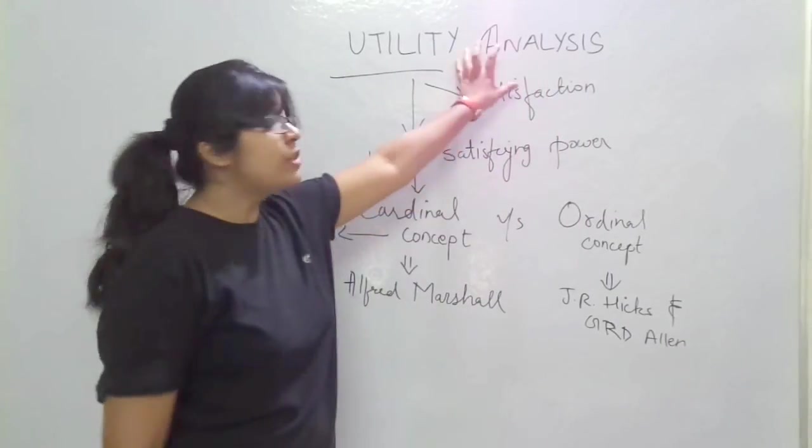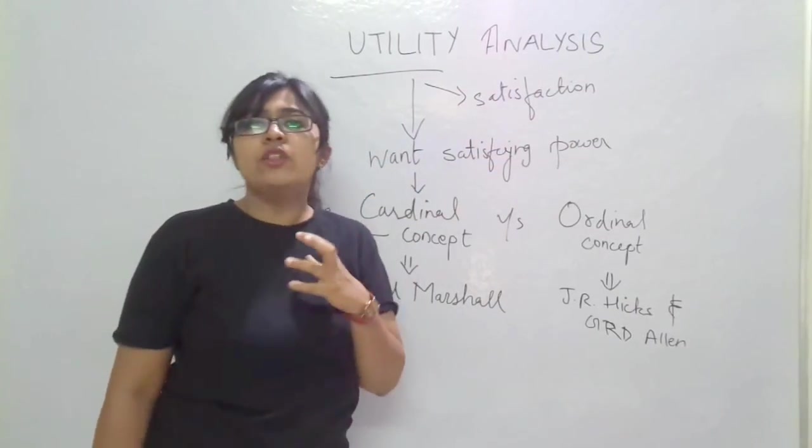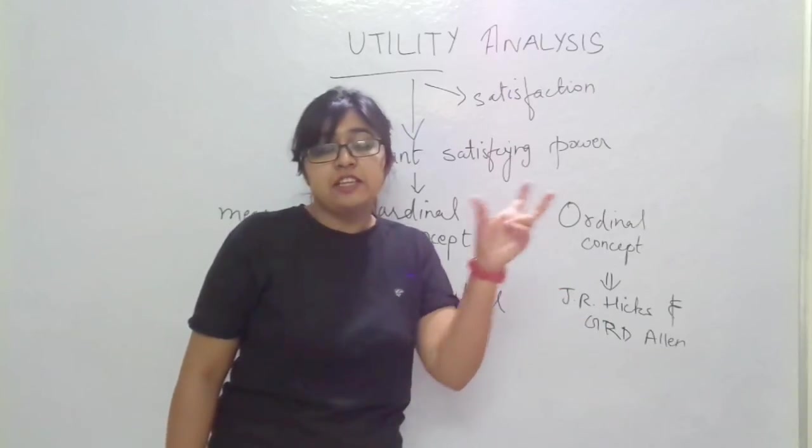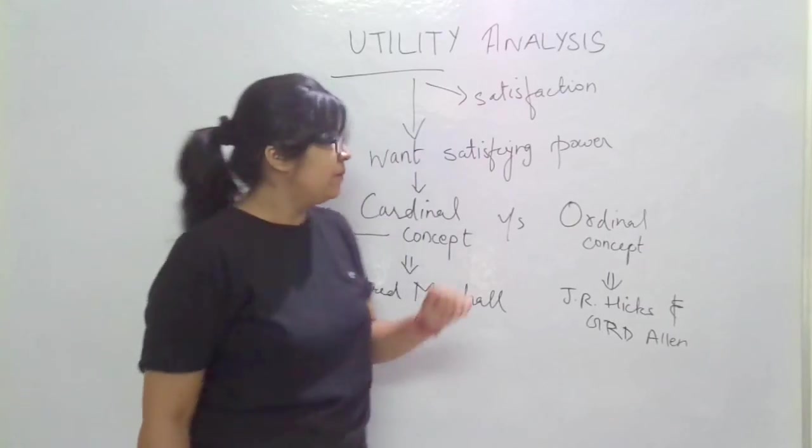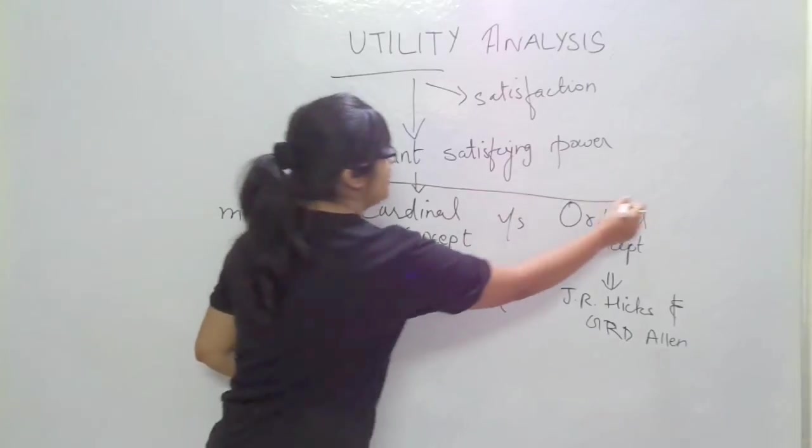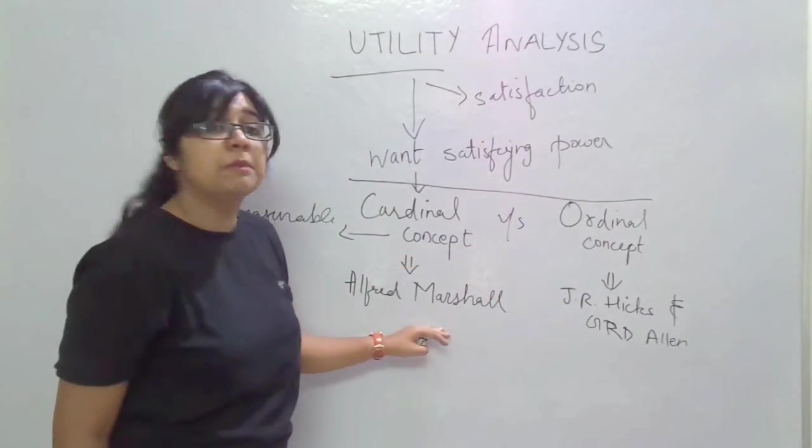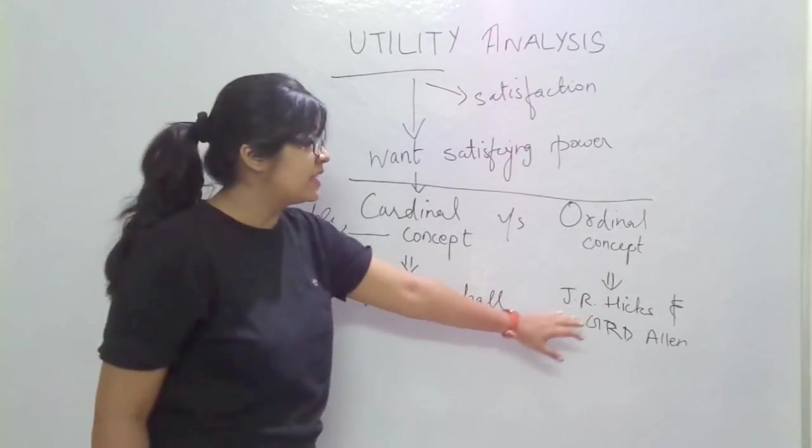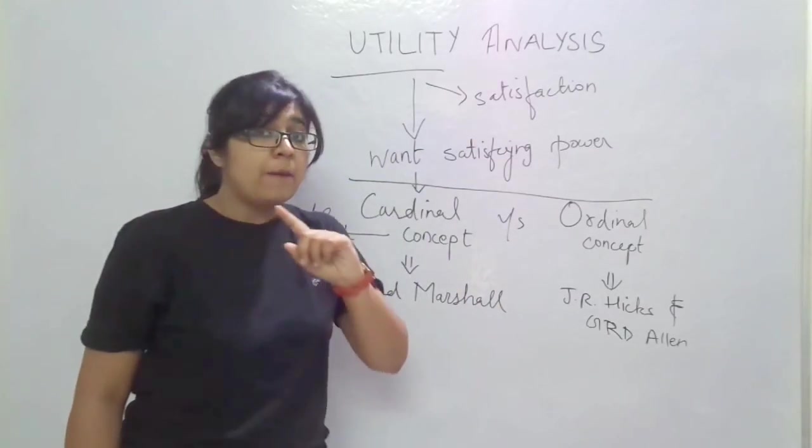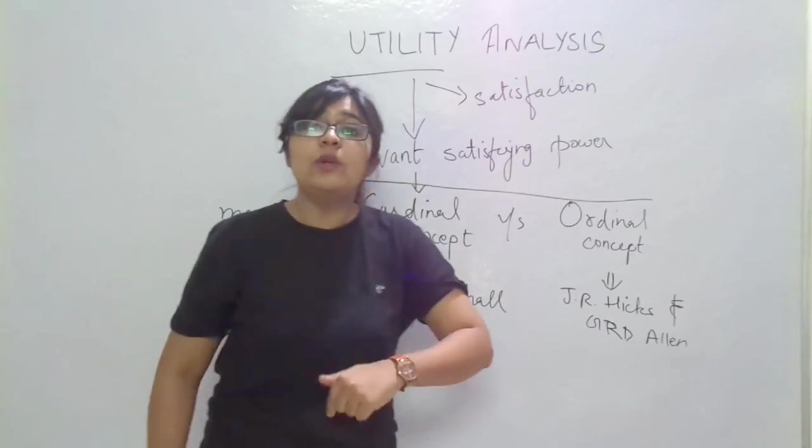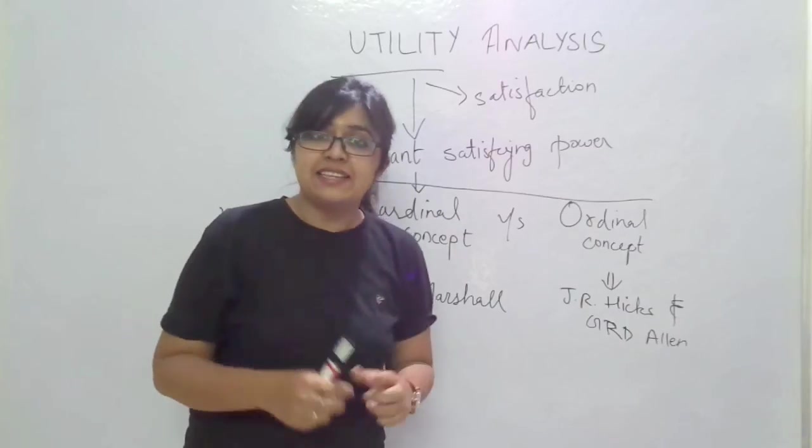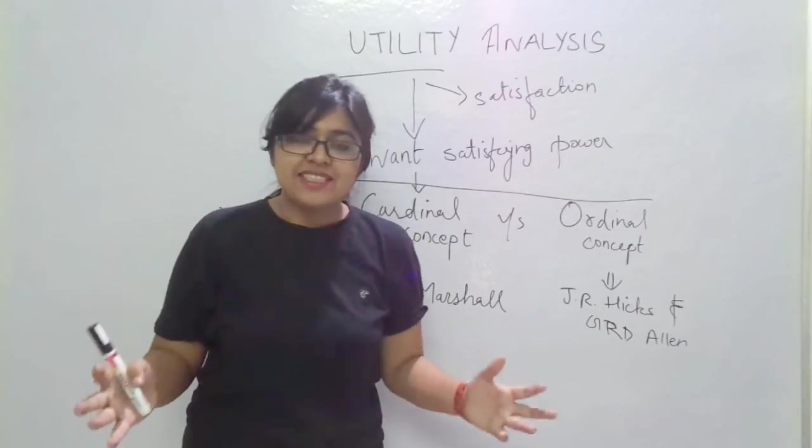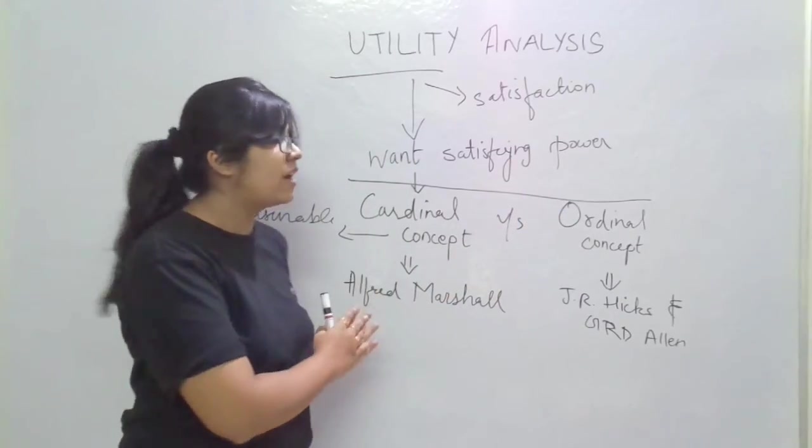So now we know that in utility analysis, utility means satisfaction or the want that a human has that has to be satisfied. So the want satisfying power in a commodity will give a certain amount of utility to the consumer. And utility analysis can be divided into cardinal concept as well as ordinal concept. Cardinal concept was given by Alfred Marshall who said that utility is measurable or quantifiable. And on the other hand, ordinal concept was given by J.R. Hicks and J.R.D. Allen who said that no, utility cannot be measured but can only be compared. It can only be ranked and you can only say that this satisfaction level is higher or lower than this satisfaction level. And this is how we would sum up the utility analysis and the difference between the cardinal and ordinal concept.